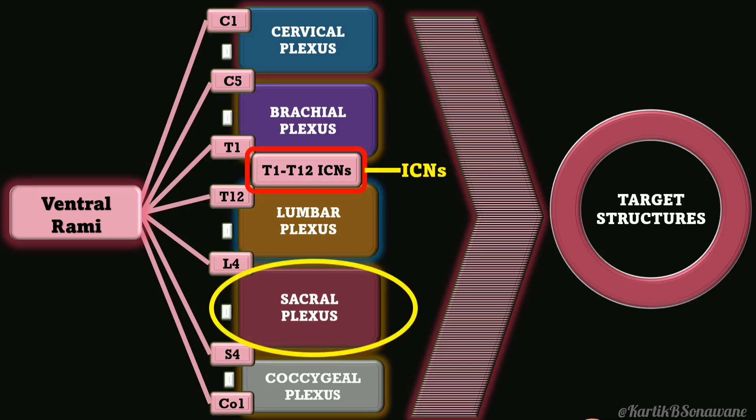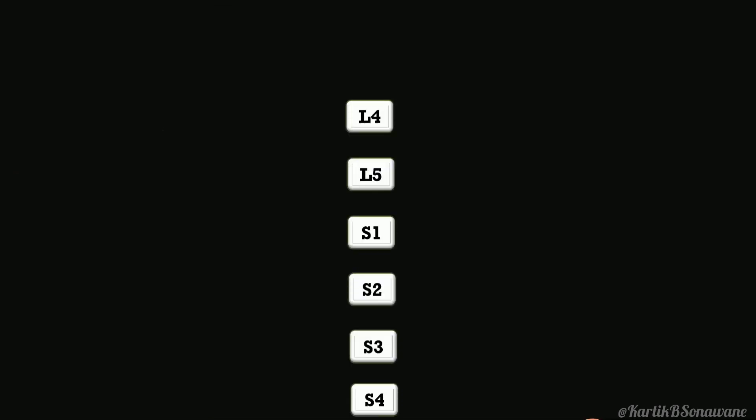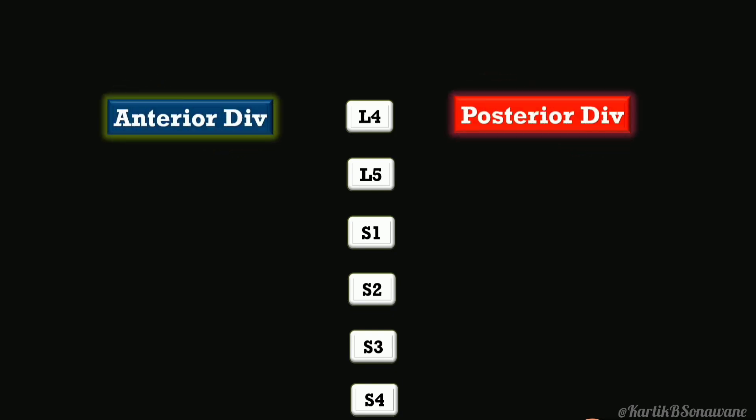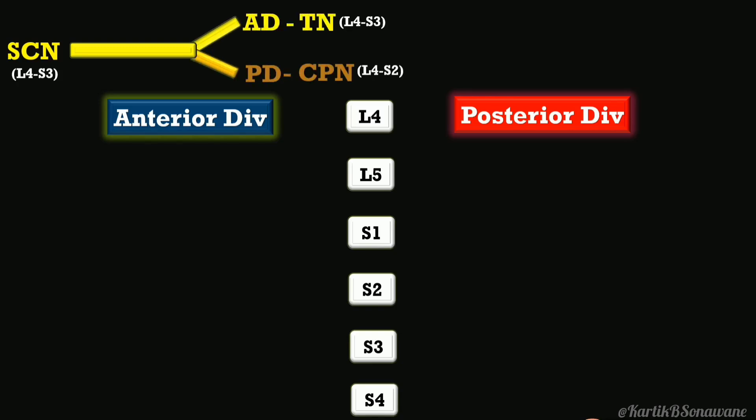The sacral plexus is formed by the ventral rami of L4 to S4. Its branches arise from both anterior and posterior divisions — some nerves come from the anterior, others from the posterior. Two nerves come from both divisions, including the sciatic nerve with root value L4 to S3, formed by the tibial nerve from the anterior division and the common peroneal nerve from the posterior division.